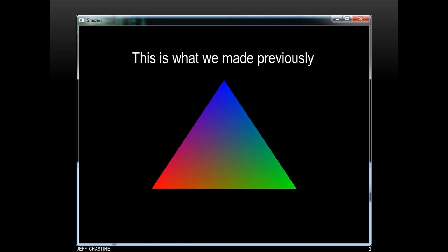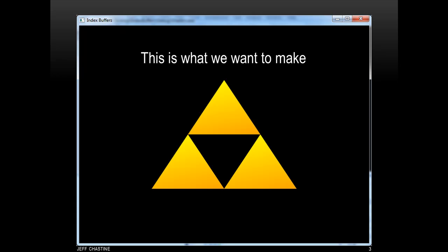In a previous tutorial, we made the triangle that you see here. If you remember, the triangle had three vertices and each vertex had a different color. And in this tutorial, we're going to talk about something that looks like this.